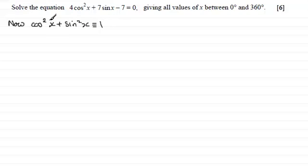And from this, if we make cos squared x the subject, we can express it in terms of sine squared x. So cos squared x is identical to 1 minus sine squared x.